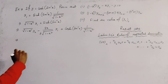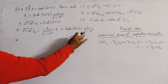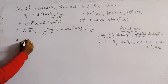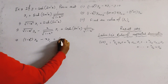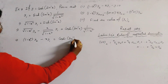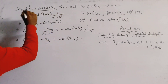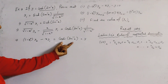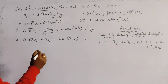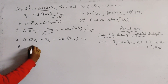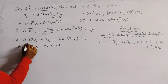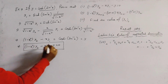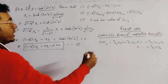Multiplying through by root(1 minus x squared) on the left side, we get (1 minus x squared)·y₂ minus x·y₁, and the right side is cosh(sin⁻¹ x) which equals y. So substituting y on the right side, we get (1 minus x squared)·y₂ minus x·y₁ minus y equals 0. This is our first target achieved.